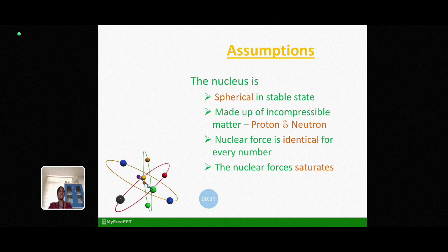Okay. What are the basic assumptions assumed by Bohr and Wheeler for this liquid drop model? Well, they assumed that the nucleus is spherical in stable state. We know the nucleus is made up of proton and neutron and these proton and neutron are incompressible matter. And the nuclear force is the strongest force in nature that exists between the nucleons and is identical for all the combinations of protons and neutrons.